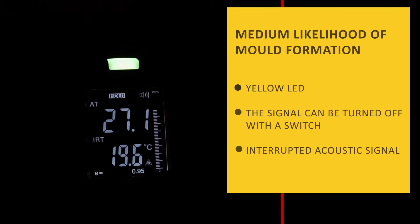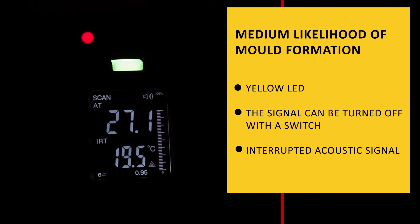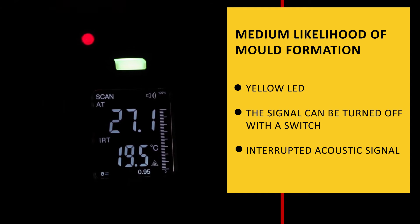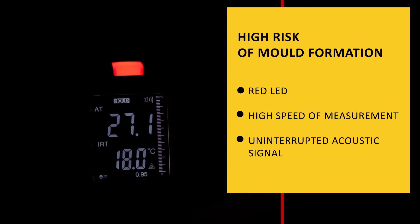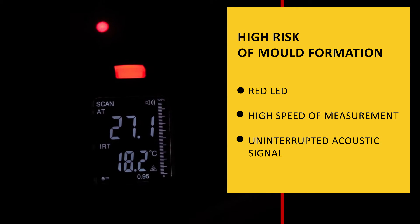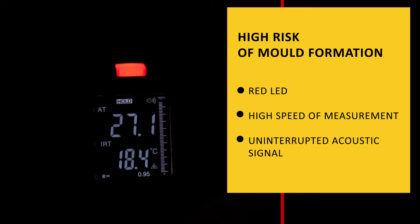A yellow LED and interrupted acoustic signal mean a medium likelihood of mold formation. A red LED and uninterrupted acoustic signal mean that the risk is high. The signal can be turned off with a switch.